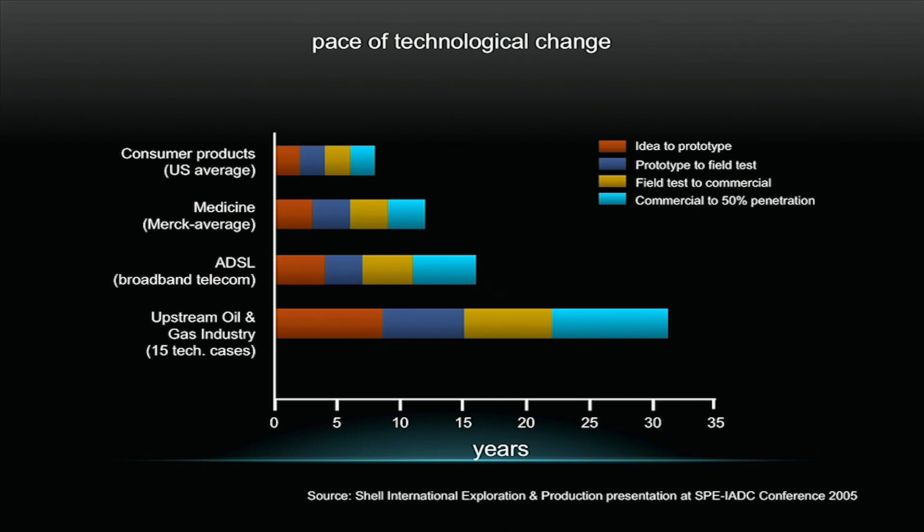But the other important observation was that I realized from those discussions that the industry that I was working in was fundamentally different in some pretty important ways to what was happening in those other people's industries. Specifically, my industry seemed to have a much slower rate of technological evolution. Not a little bit different, profoundly different. Very promising technologies that were always going to make it in the upstream oil and gas industry can still take upwards of 20 or 30 years sometimes to get traction in the industry and get absorbed.